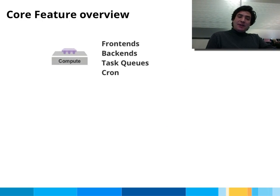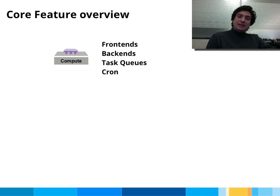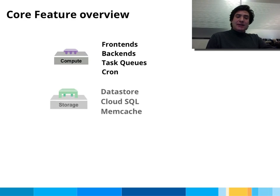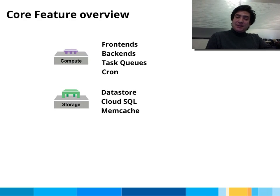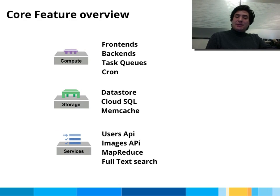Some of the core features of App Engine: we have a series of compute services you can take advantage of — front ends, back ends, task queues, cron — this is where you're going to process your web requests. We have a bunch of storage and persistence mechanisms, from our non-relational data store to Cloud SQL, as well as a high-performance in-memory cache called Memcache. We also have a series of services and APIs that you can take advantage of to manage your users, image manipulation, and so forth.